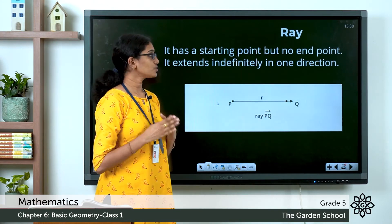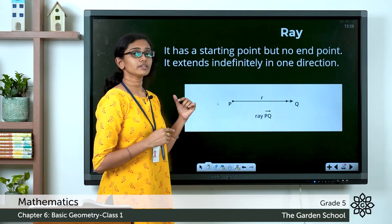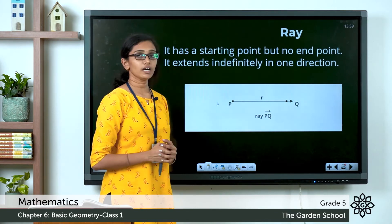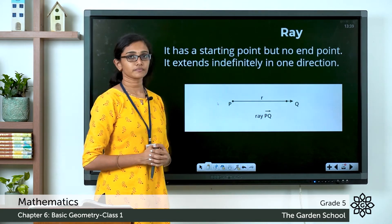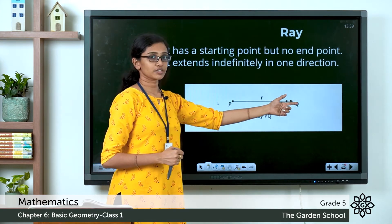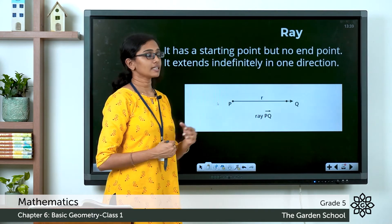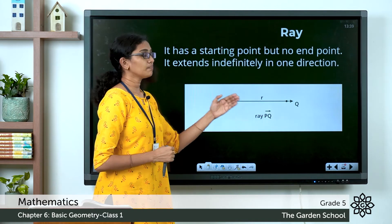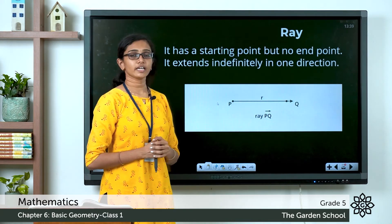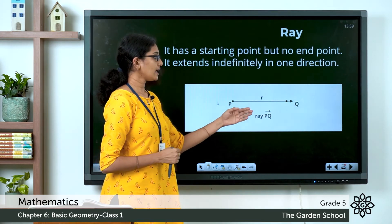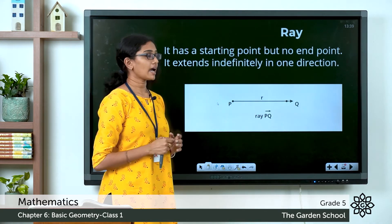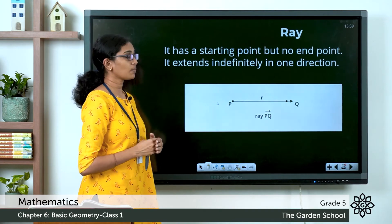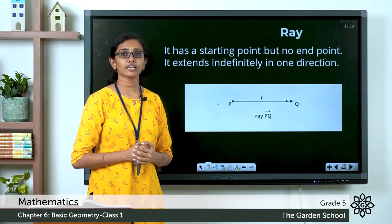What do you mean by a ray? A ray is also a part of a line, but it has a starting point and goes on endlessly in one direction — it does not have a definite length. You can see ray PQ here: it has a starting point P and extends infinitely in one direction, with point Q marked on the ray. You write a ray using the names of two points with an arrow above pointing in one direction. A ray has a starting point but no end point.